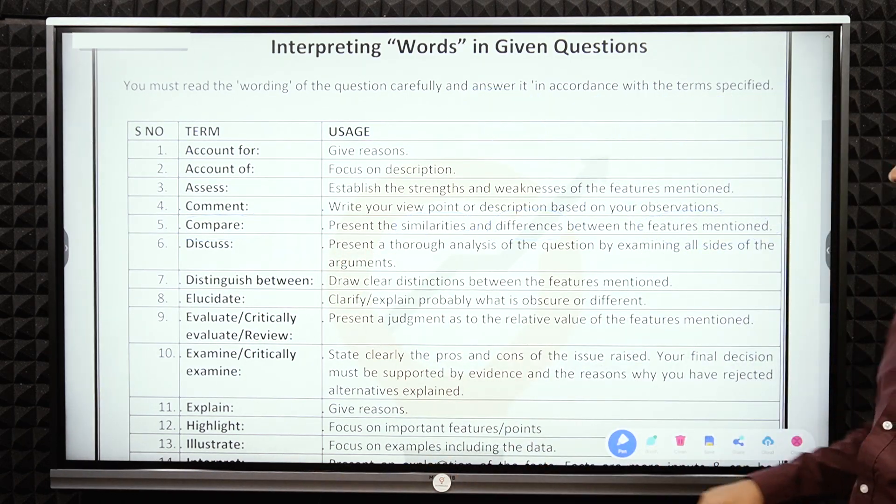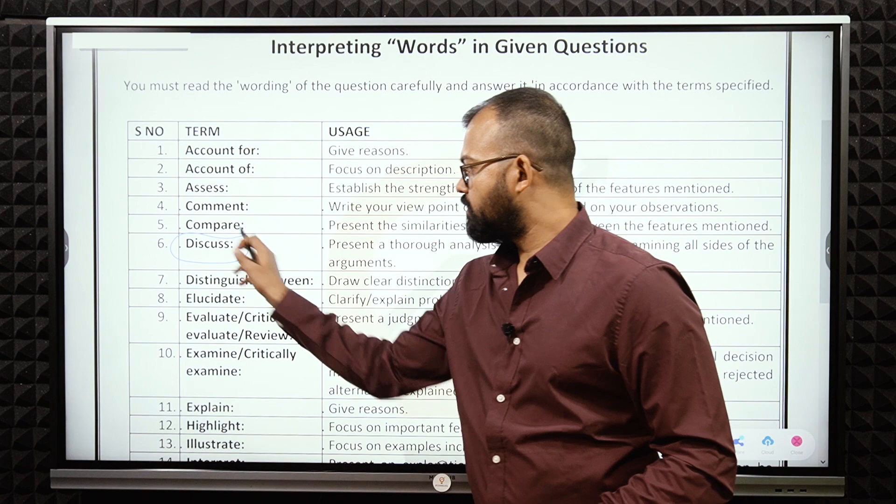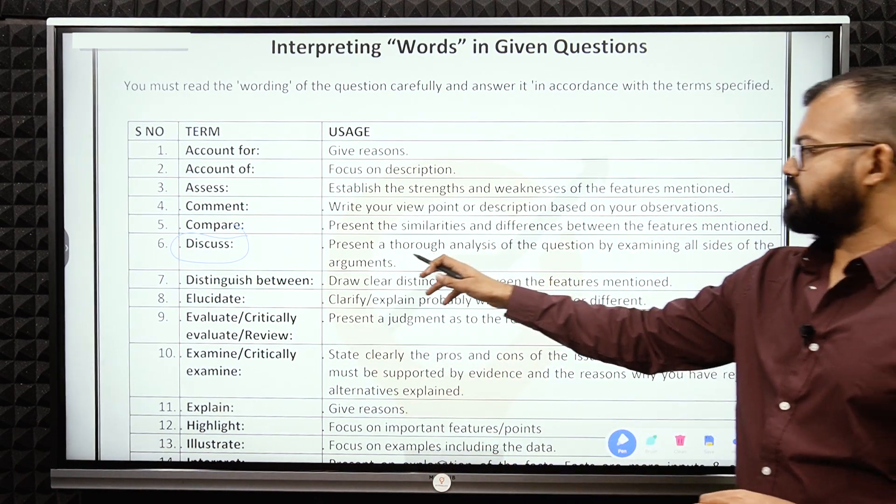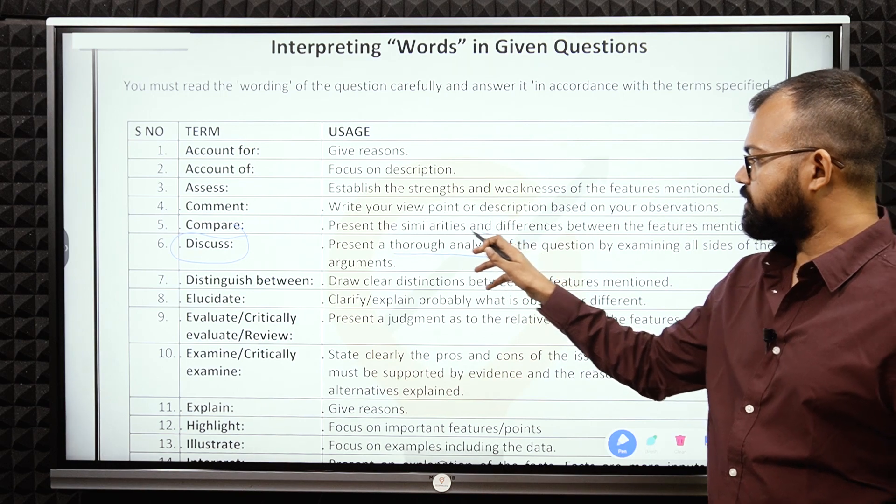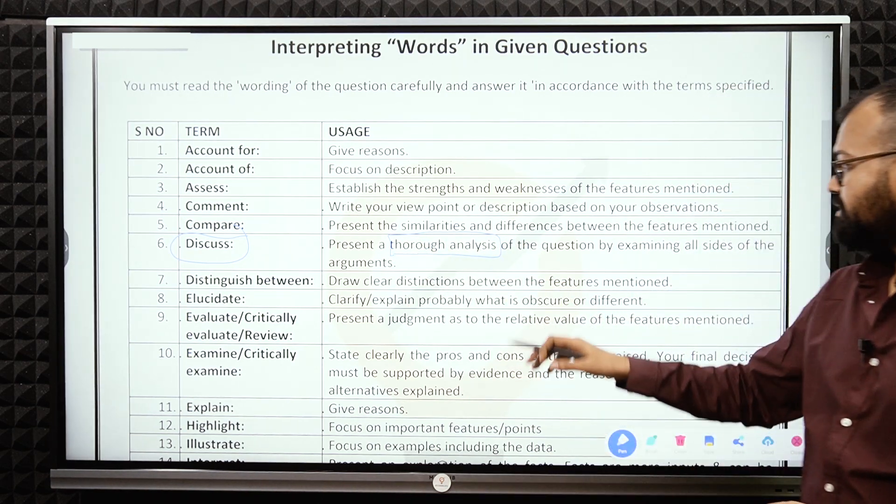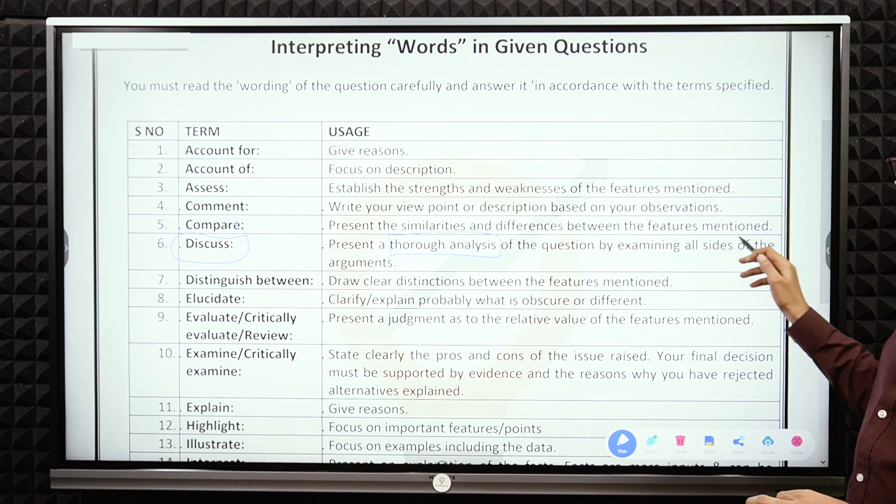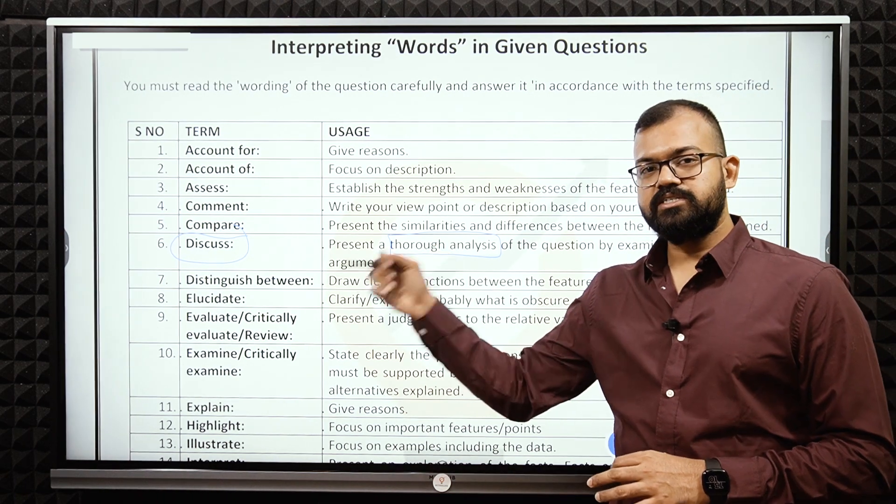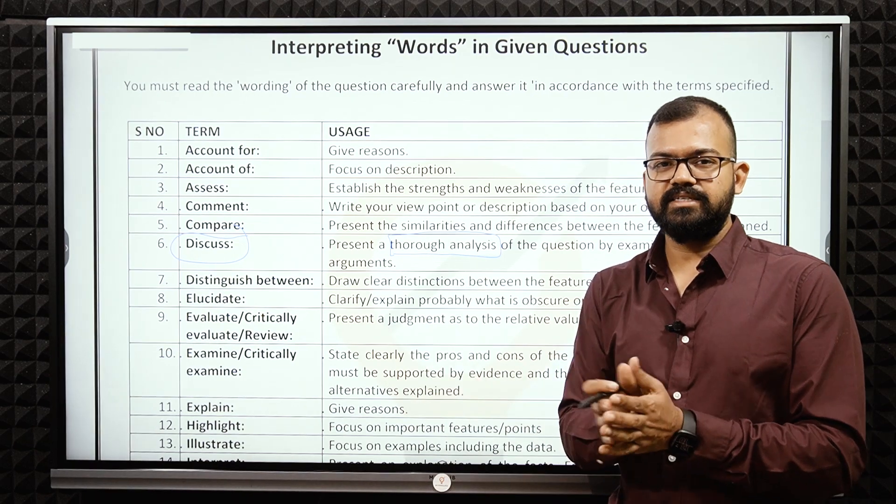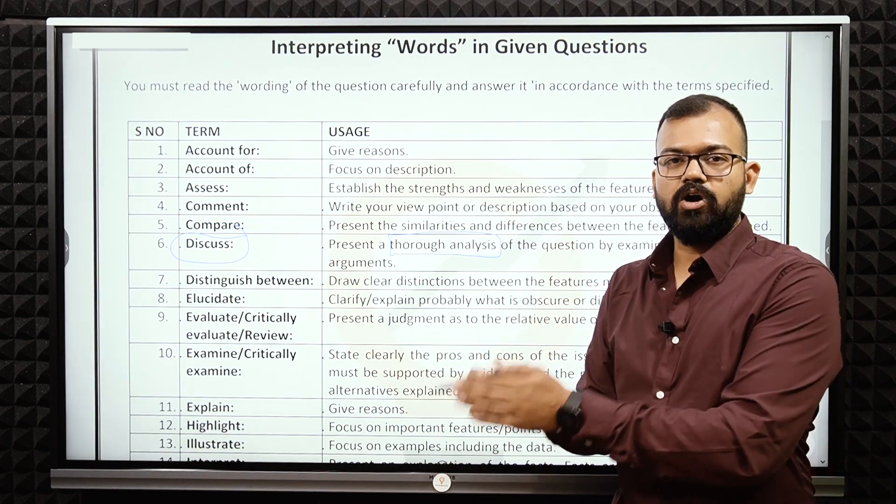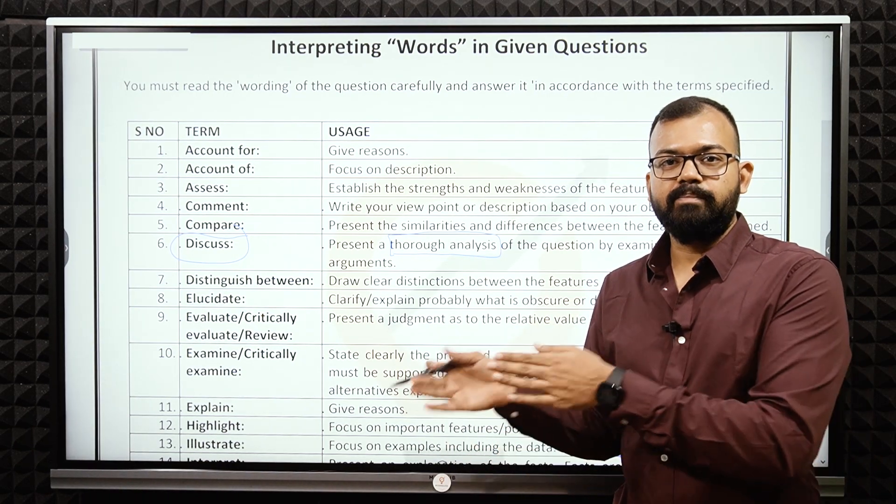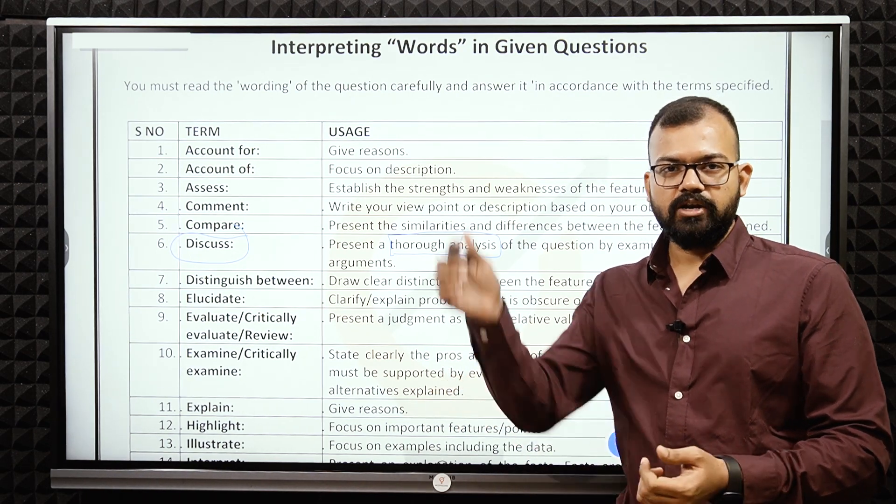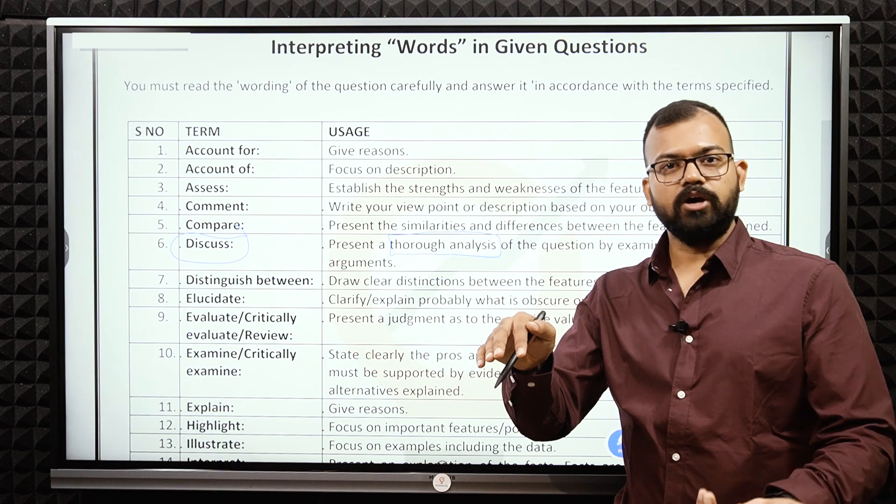Next one is discuss. When we talk about discuss, we have to present a thorough analysis. I hope you understand the meaning of thorough: in-depth analysis of the question by examining all sides of the argument. Discussion is very important. Like discuss the COVID scenario and the economy. What is the impact? Another discussion: recent times, you can see economy is going down, stock market going up.